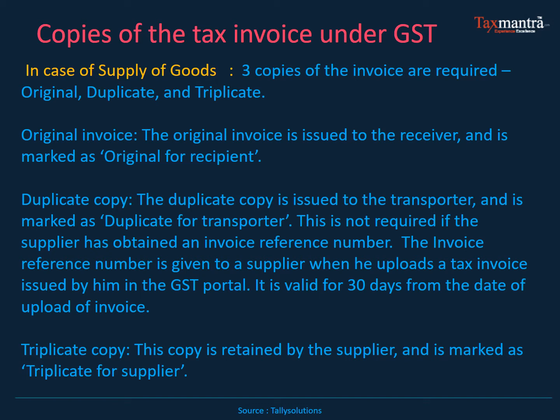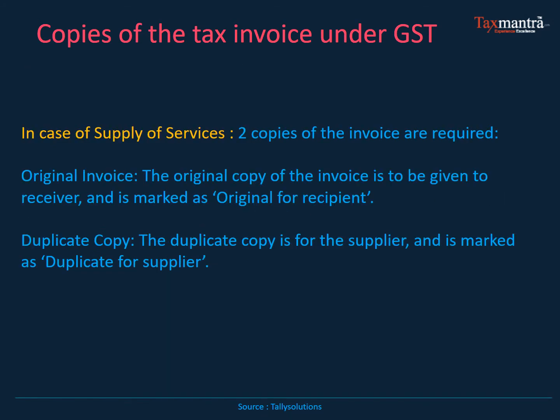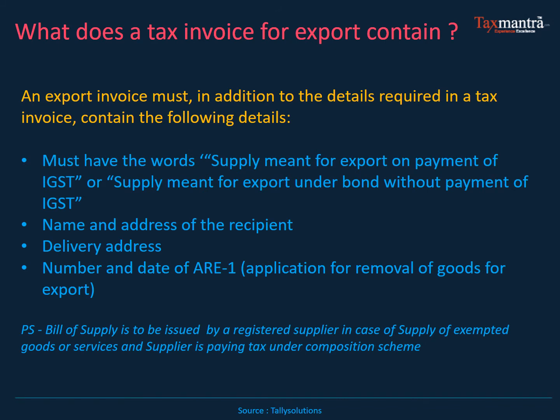The triplicate is retained by the supplier or seller and is marked as 'triplicate for supplier.' In case of supply of services, two copies of invoices are required: one original copy for the recipient, and one duplicate copy for the supplier.